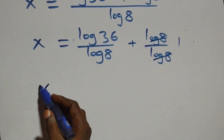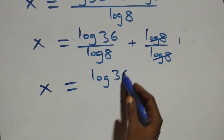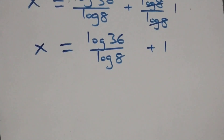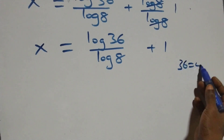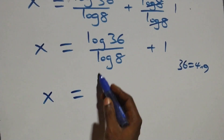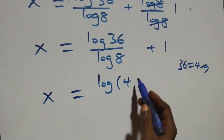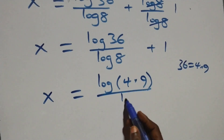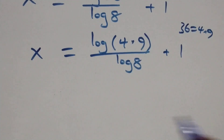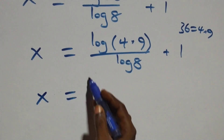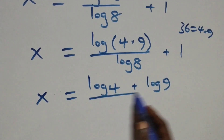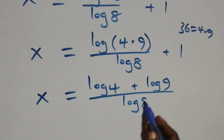What we have here becomes x equals log(36/8) plus 1. From here, we can express 36 as 4 times 9, which implies x equals log(4 times 9) over log 8, plus 1. This also follows from the law of logarithms, so we have x equals log 4 plus log 9, over log 8, plus 1.